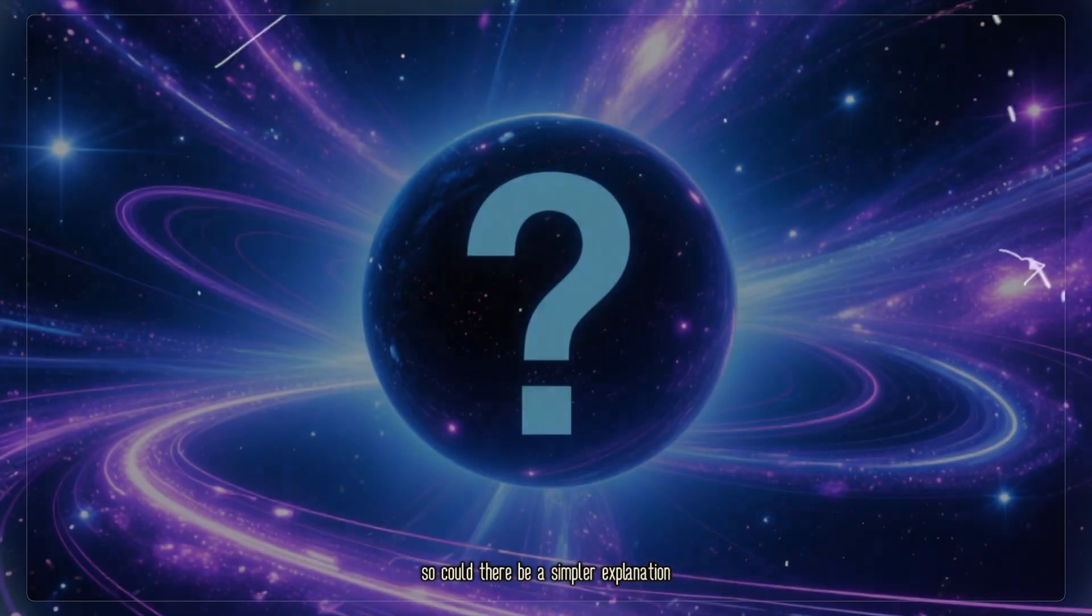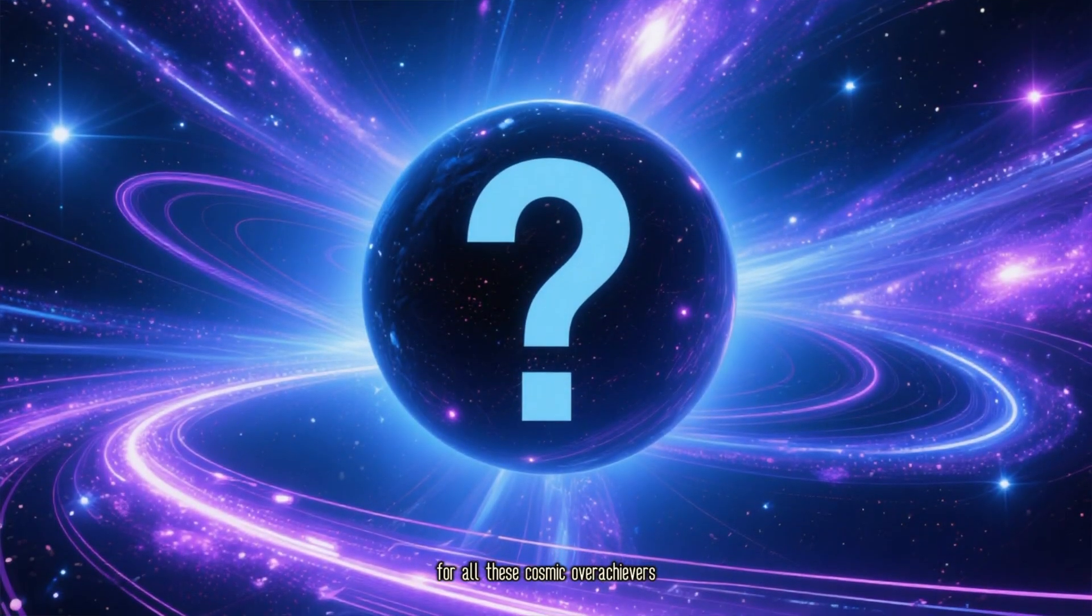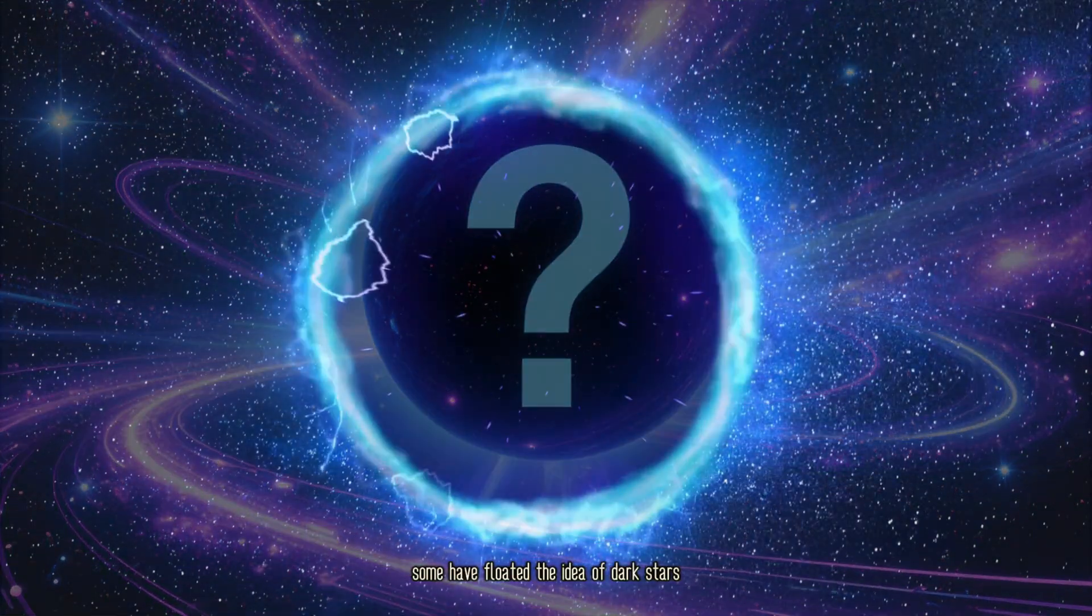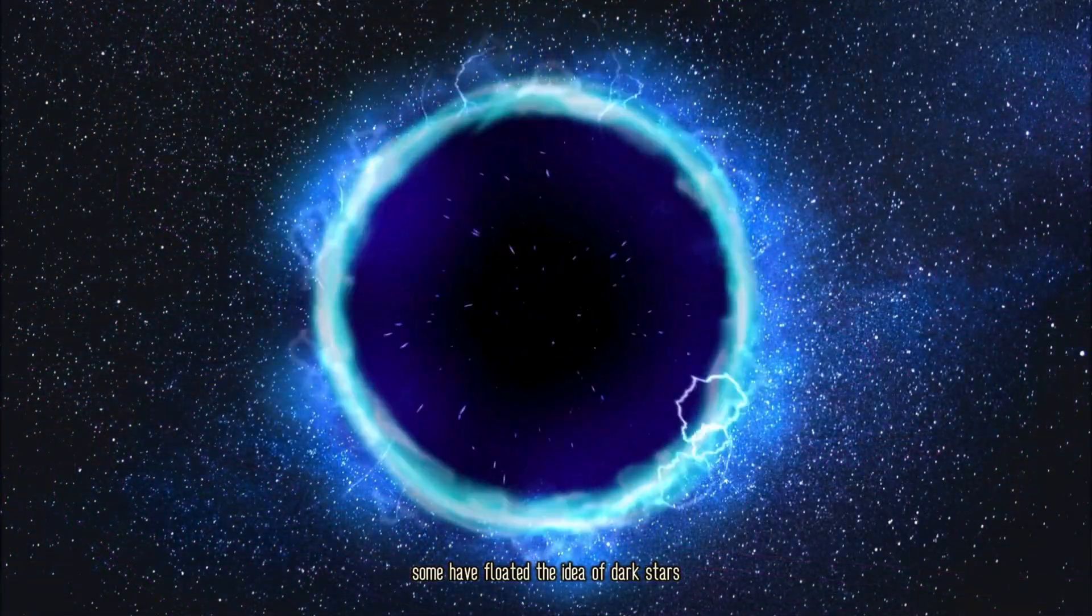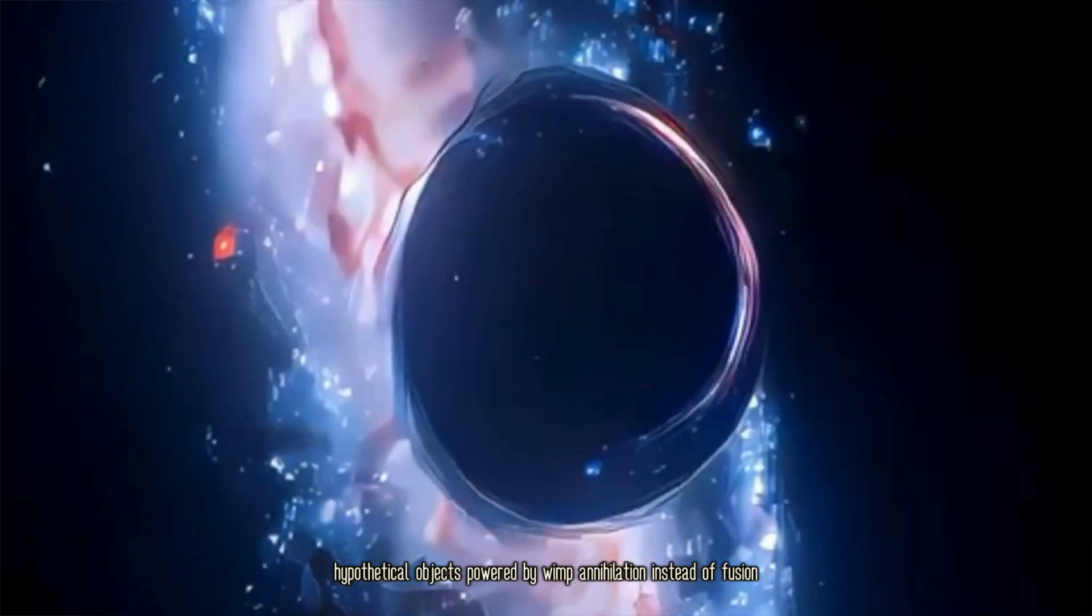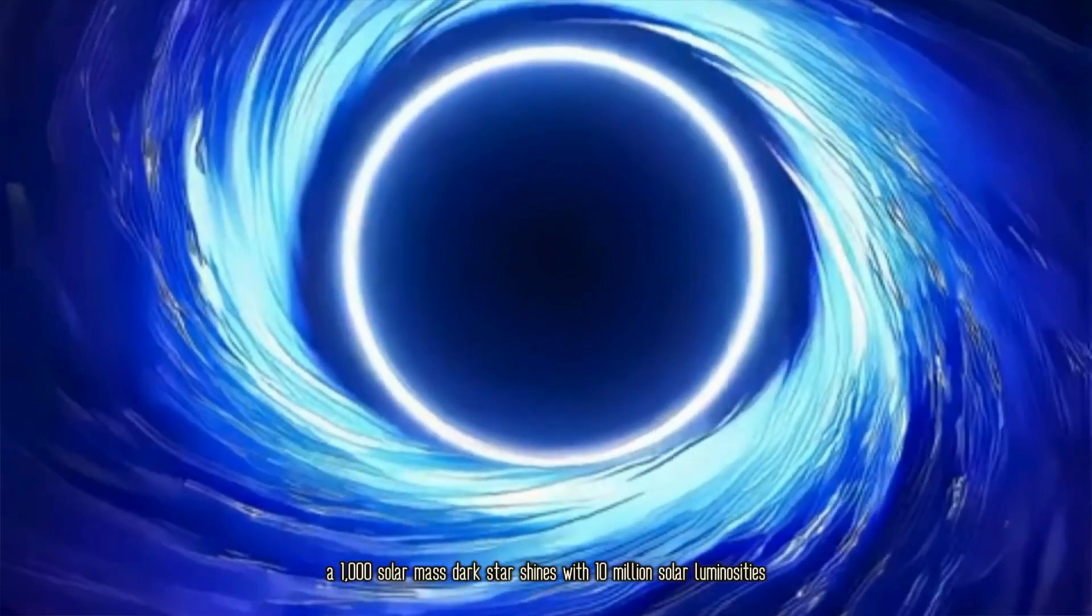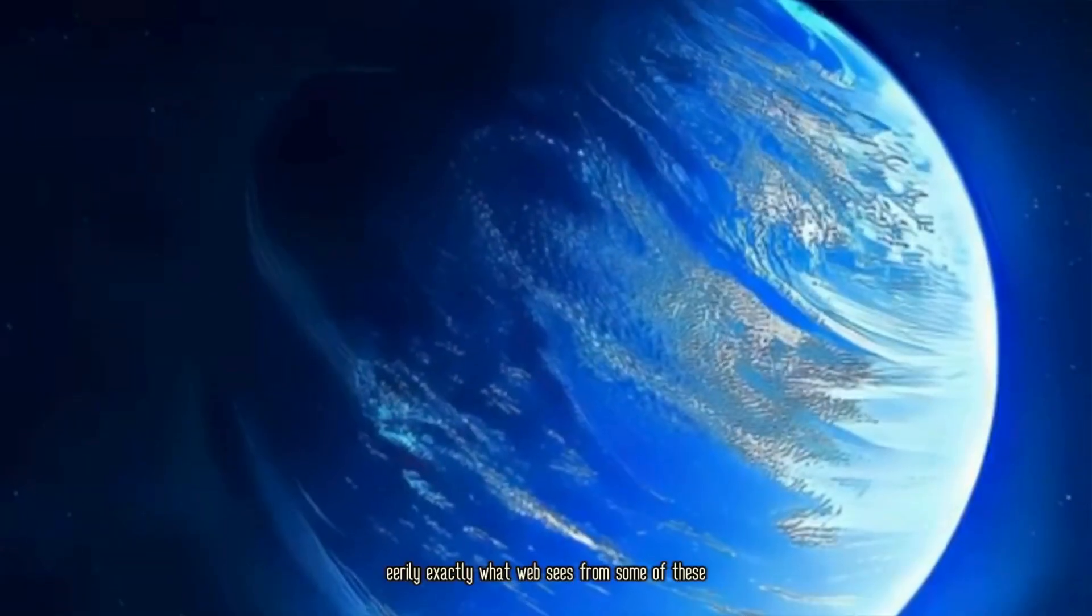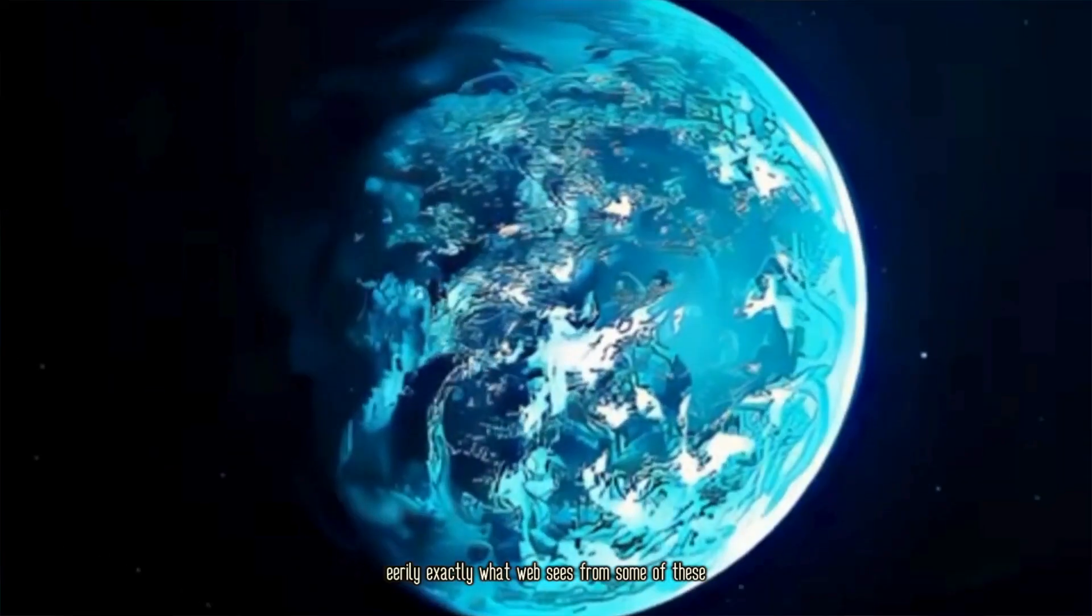So could there be a simpler explanation for all these cosmic overachievers? Some have floated the idea of dark stars, hypothetical objects powered by WIMP annihilation instead of fusion. A 1,000 solar mass dark star shines with 10 million solar luminosities, eerily exactly what Webb sees from some of these.